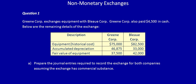Question one: Green Corporation exchanges equipment with Blue Corporation. Green Corporation also paid $4,500 in cash, so in addition to giving up their capital asset they also paid cash. Below are the remaining details of the exchange — information about Green Corporation and Blue Corporation, the two pieces of equipment exchanged, historical cost, accumulated depreciation to date, and the fair value. The accumulated depreciation is up until the date of the exchange.